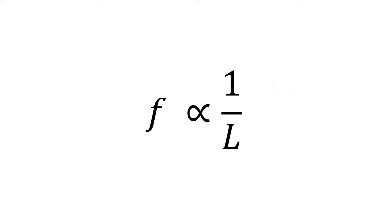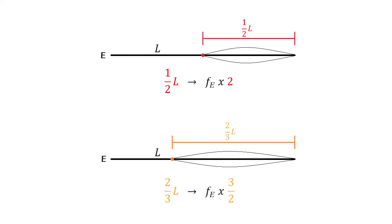This is because the frequency of the note you generate and the length of the vibrating portion of the string are inversely proportionate. For example, at half the string you generate double the frequency of the open string, and at two-thirds of the string, you generate 3 over 2 times the frequency of the open string.